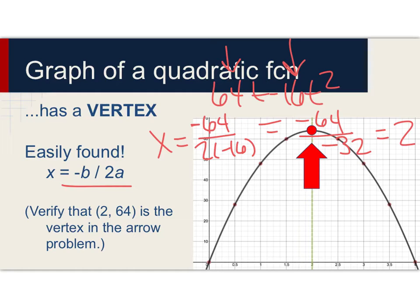As you work through this, you'll get -64 over -32, and that's 2. Earlier in our table, we showed that when t was 2, the height was 64. So we have verified that (2, 64) is the vertex.